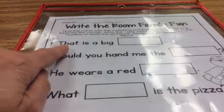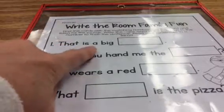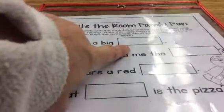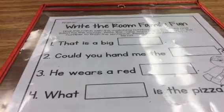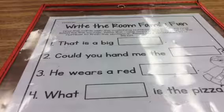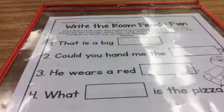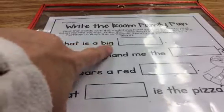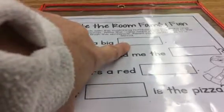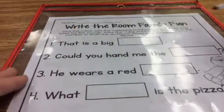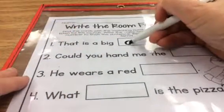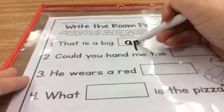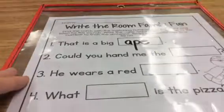Try to read sentence one. I think you might be at the zoo for this one. That is a big ape.